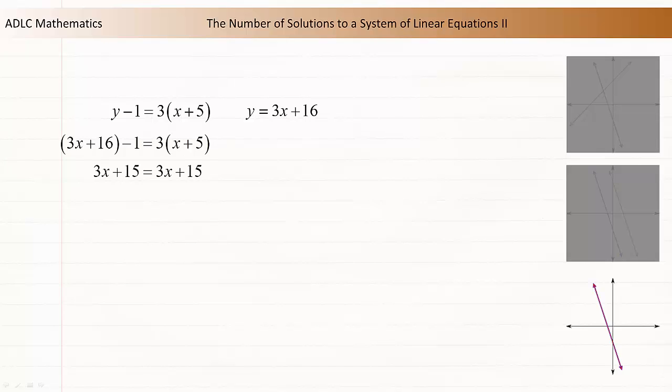16 minus 1 is 15. 3 times x is 3x, and 3 times 5 is 15. Both sides of this equation are the same, so it is a true statement. A true statement tells us that the system will have an infinite number of solutions.